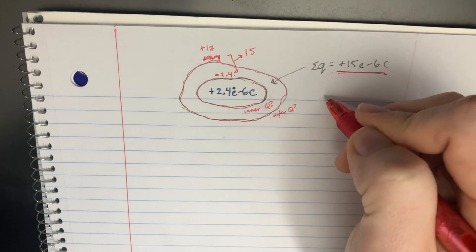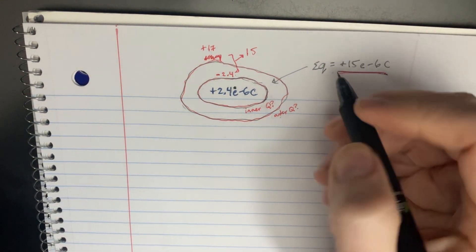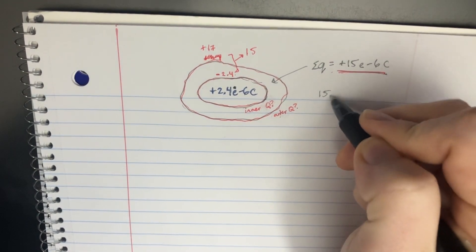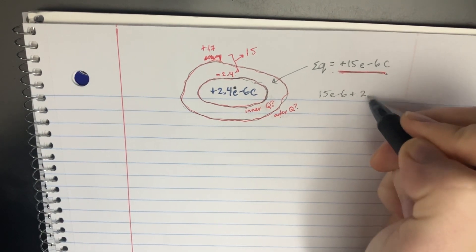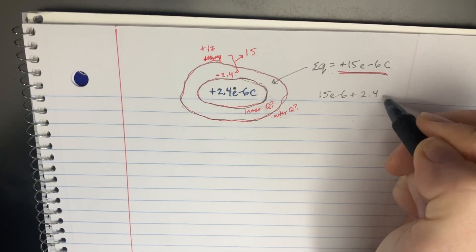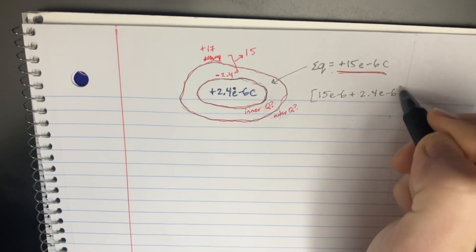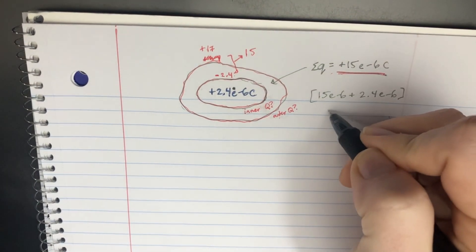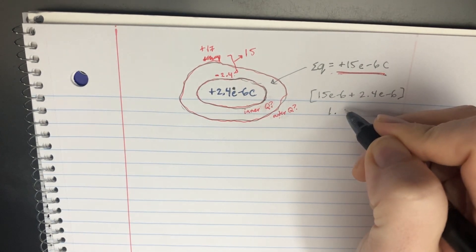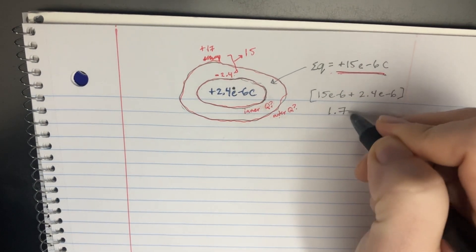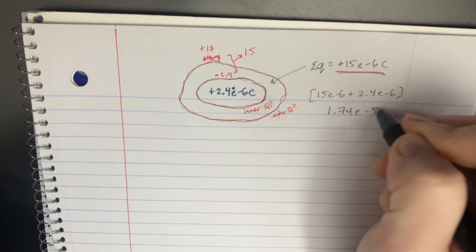And so we'll just take 15e to the negative 6, and then we're going to add 2.4e to the negative 6. And that's going to give us a total of, I believe it's 1.74e to the negative 5.